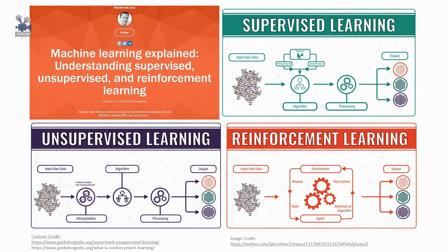For instance, suppose you are given a basket filled with different kinds of fruits. The first step is to train the machine with all different fruits one by one. If the shape of the object is rounded with a depression at the top and has the color red, then it would be labeled as apple. If the shape of the object is long, curving, and cylindrical with color green or yellow, then it will be labeled as banana.